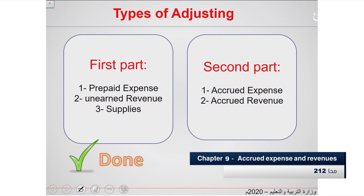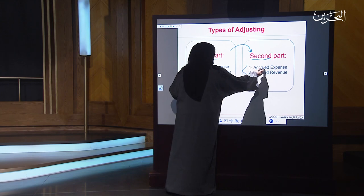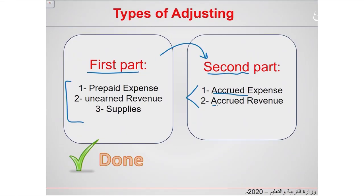Regarding types of adjusting entries, there are two parts. The first part covers prepaid expense, unearned revenue, and supplies — which we already covered in the previous lesson. In today's lesson, we talk about the second part: accrued expense and accrued revenue.